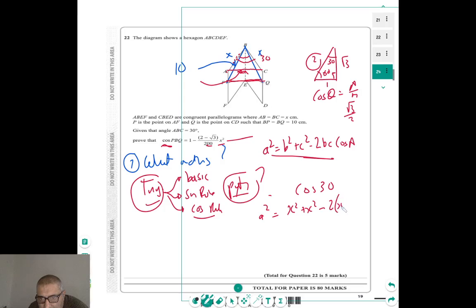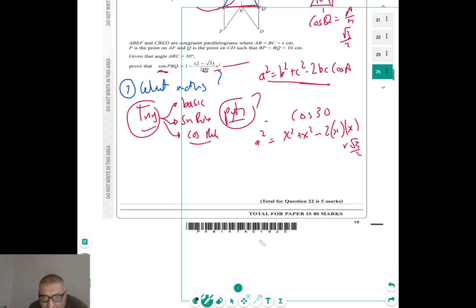Minus 2 times X, which is b, times X, times root 3 over 2. So if I simplify this out, I have X squared plus X squared, so a squared equals 2X squared minus 2X squared times root 3 over 2.